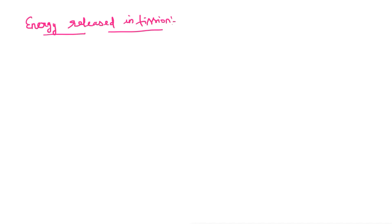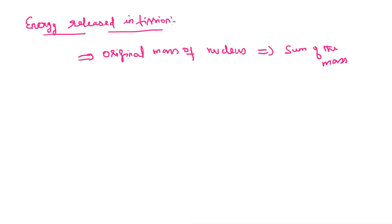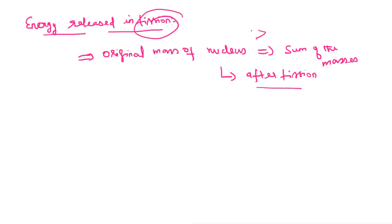What is meant by energy released? The energy we produce — how can energy be produced? The original mass of the nucleus is always greater than the sum of the masses produced after fission. The total mass of the nucleus is always greater than the sum of the masses produced after fusion.